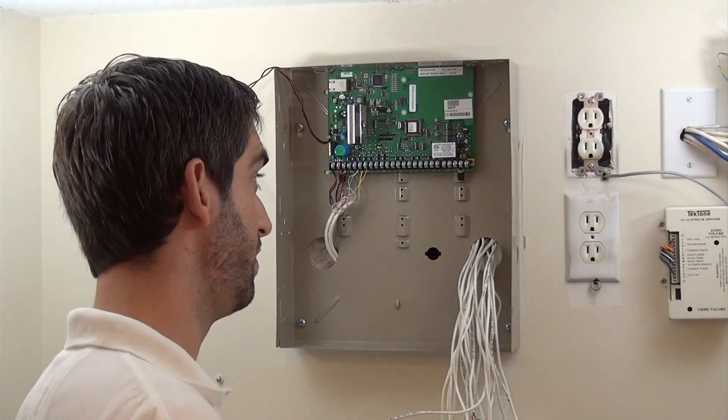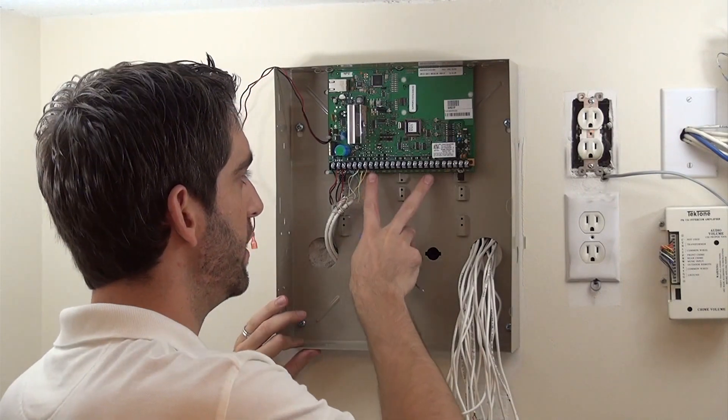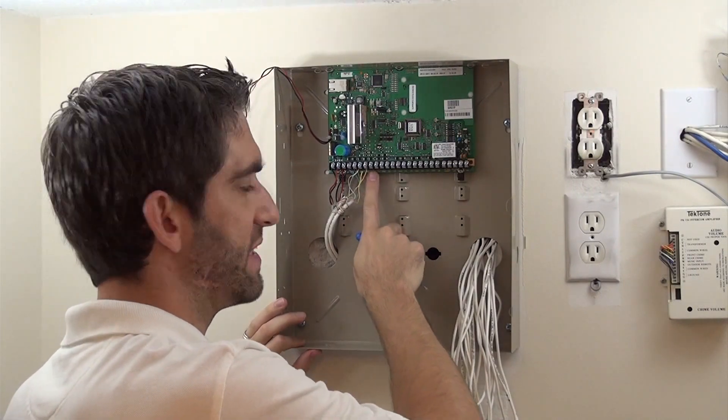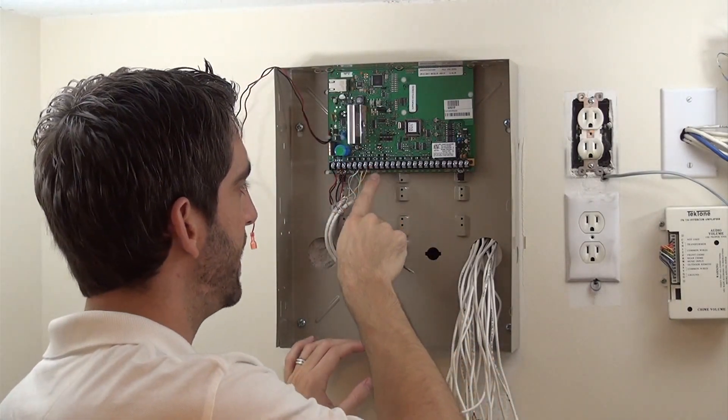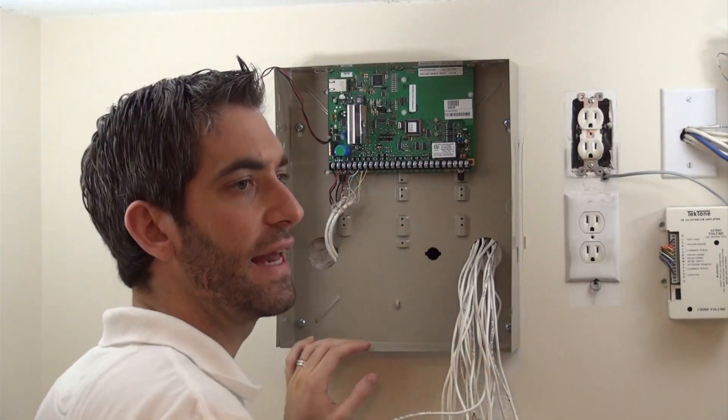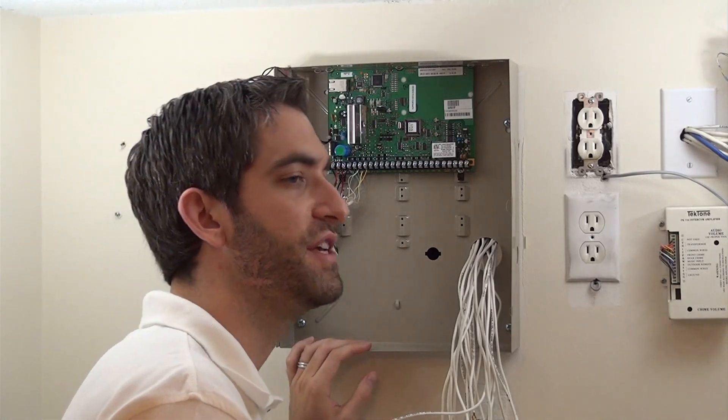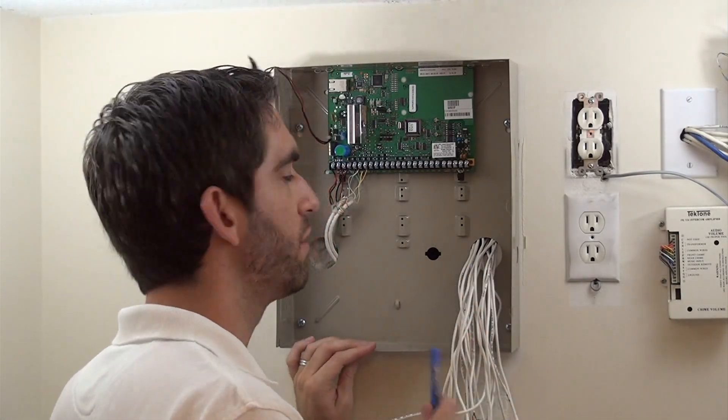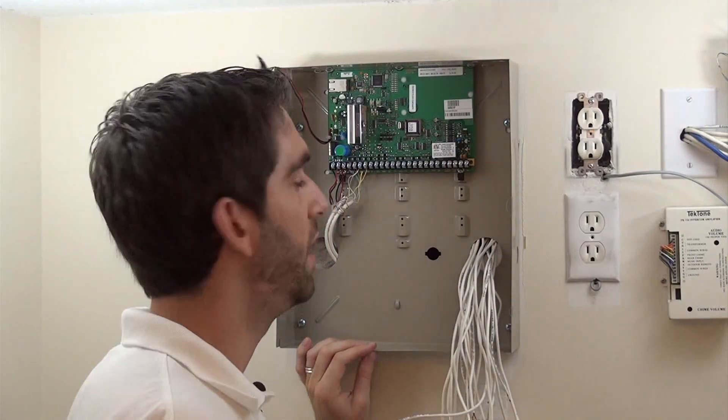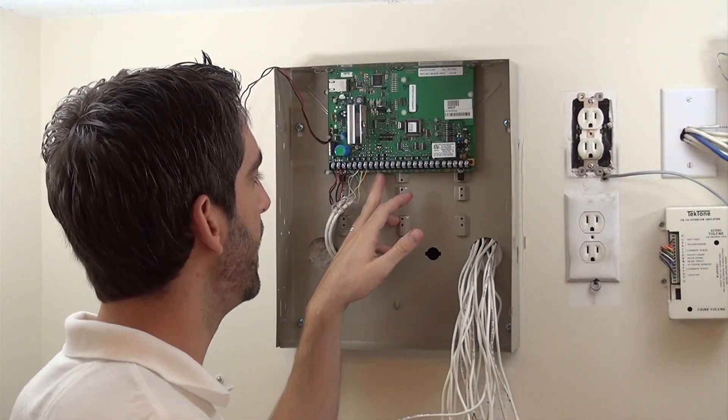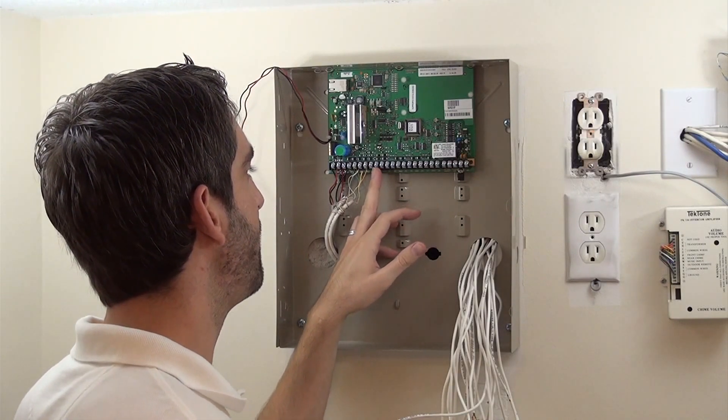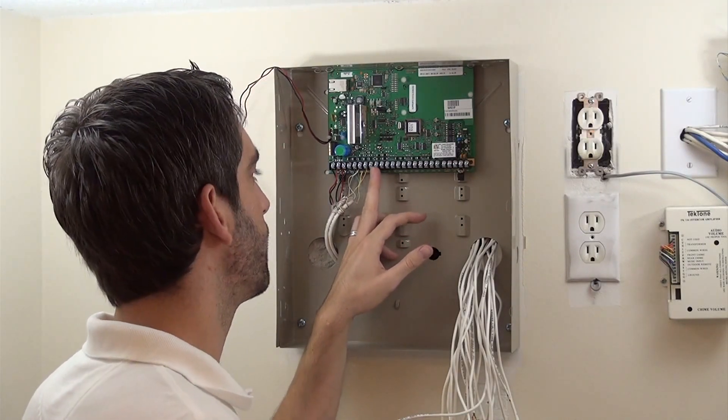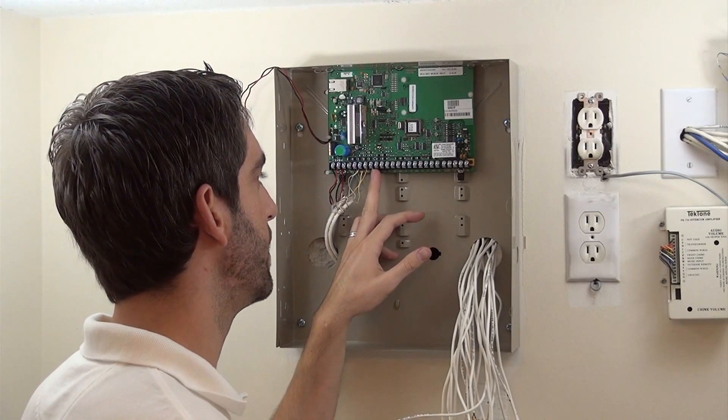The VISTA-21IP comes programmed with zones one through eight enabled. Zone one is set up as a fire zone by default. Two wire smoke detectors attached to this first terminal get an auto power reset when you disarm the system. So if you are going to have wired smokes, you should always use terminals Z1 plus and Z1 negative. For us, we don't have any smoke detectors tied into this system. So we're going to use that as a simple door window zone.